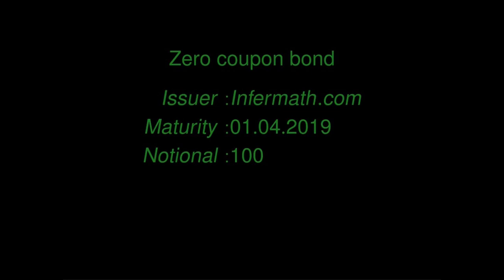Note that who lends the money is not specified in the contract. This is how bonds are different from deposits or loans, which are debt contracts for which both parties are specified. The reason is that the lender, who is the owner of the bond, can change during the life of the bond. In other words, there is a market where bonds can be bought and sold.